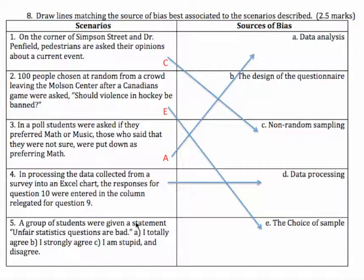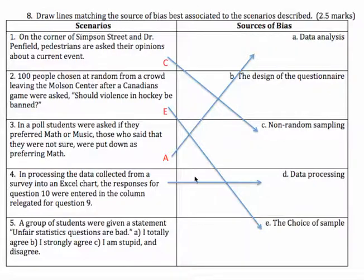Number five: a group of students were given a statement — "Unfair statistics questions are bad" — with the options: A) I totally agree, B) I strongly agree, or C) I am stupid and disagree. That's just a really badly designed questionnaire, so this is B — design of the questionnaire. And that's it for question 8. Have a good day.